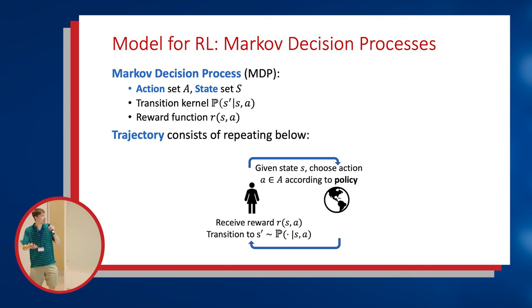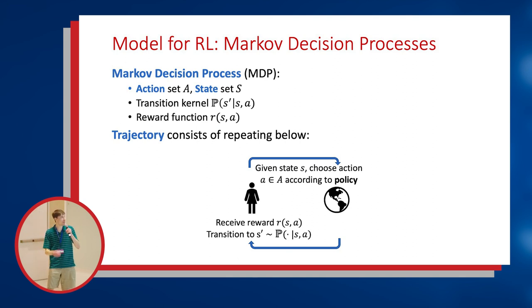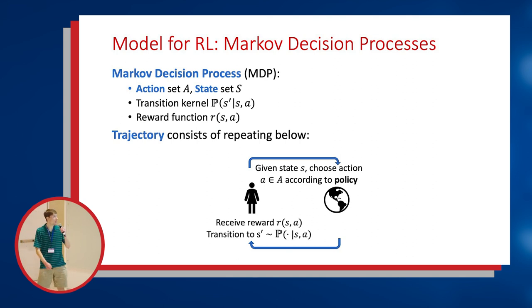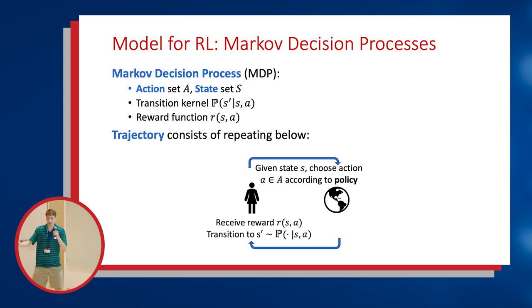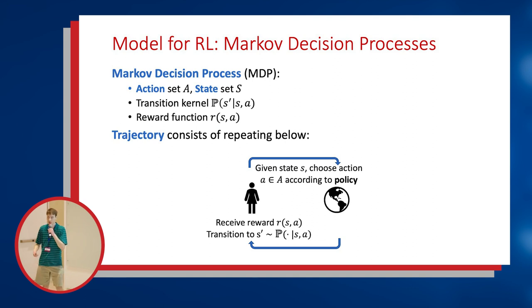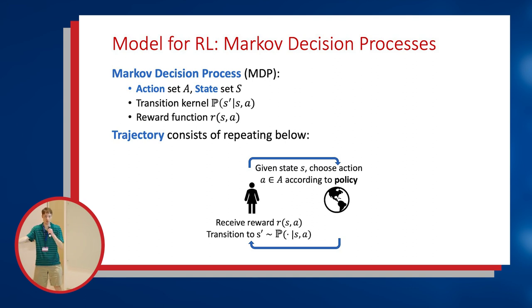There's also a reward function which tells us how much reward we receive at a given step given an action we take. In an MDP, you're repeatedly given a state, the agent chooses an action, the environment gives the agent a reward and transitions to a new state. Our goal is to maximize the total reward received over many steps of this process.